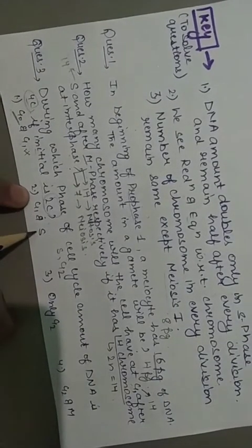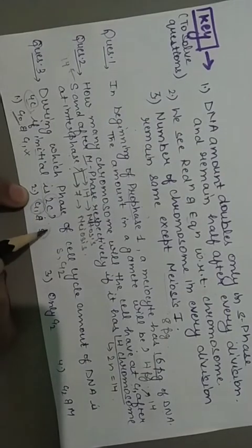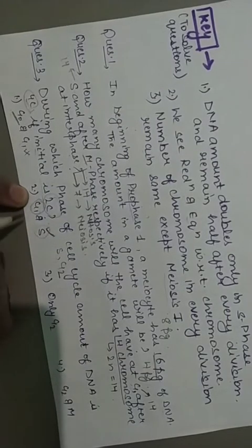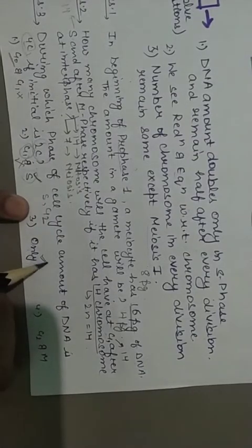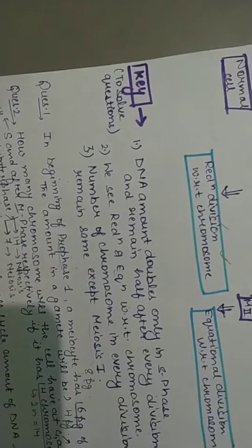G1 and S? S hai lekin G1 ke andar to matlab double hi ja ke S ke andar hua to yeh option bhi galat ho gaya. Only G2 ab tak ki option better hai. G2 and M? M ke andar to ja ke divide ho gaya to yeh option nahi. To answer is ka third.